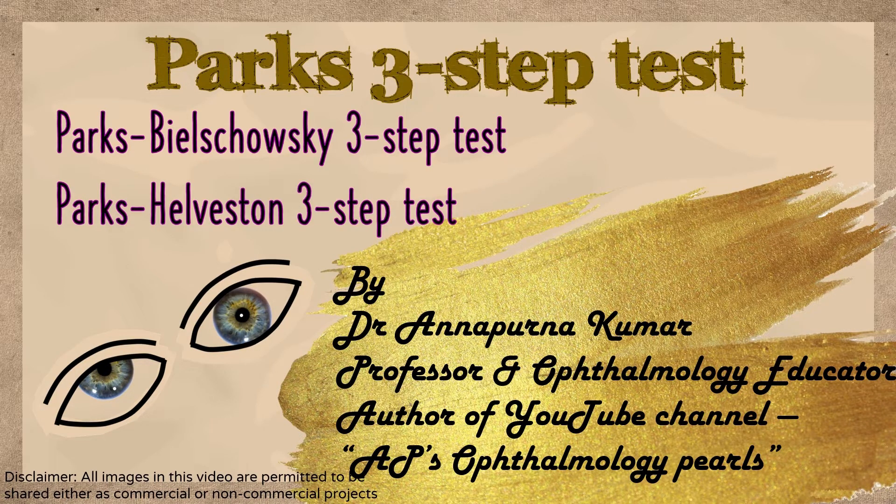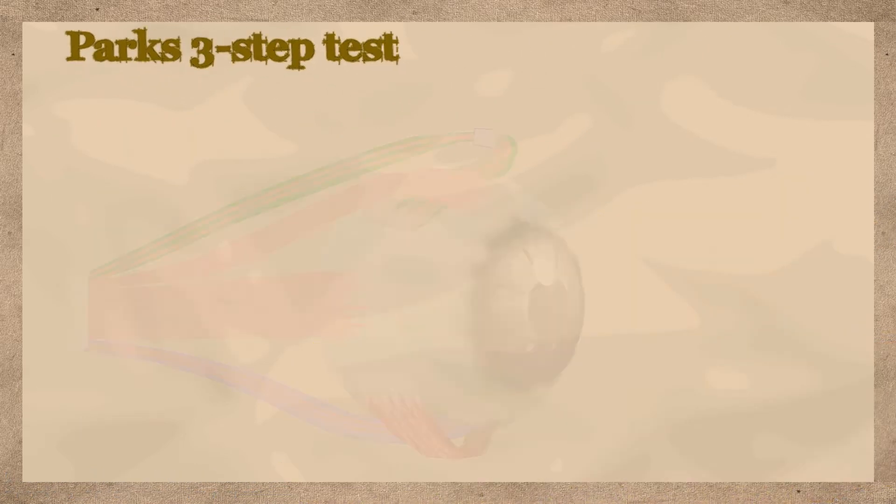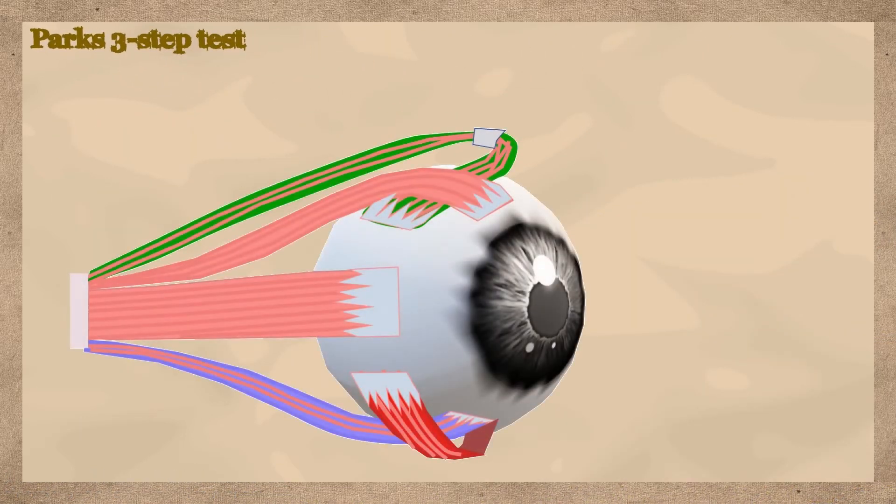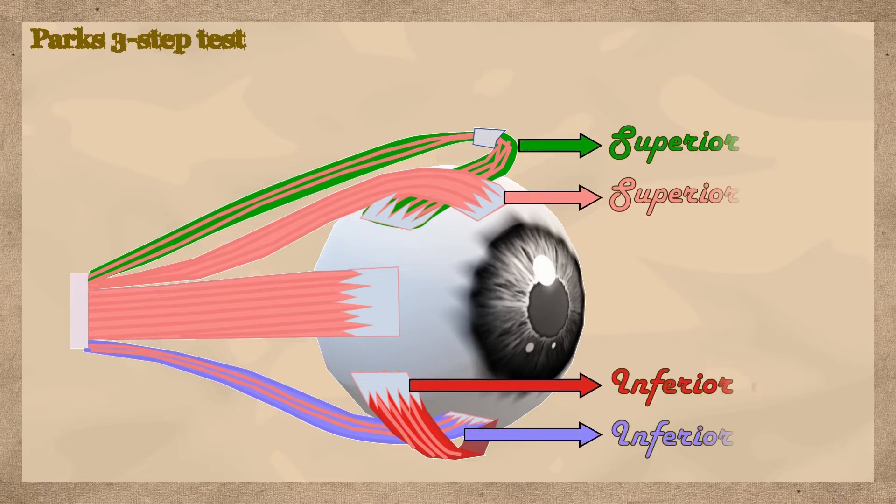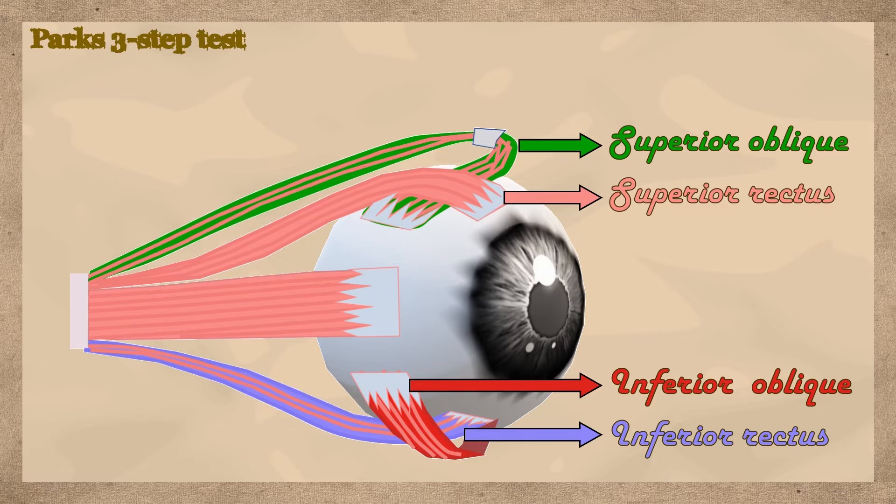This test is an algorithm to help identify a weak cyclo-vertical muscle. The extraocular muscles other than the horizontal recti are the cyclo-vertical muscles and thus there are a total of 8 muscles, 4 in each eye.